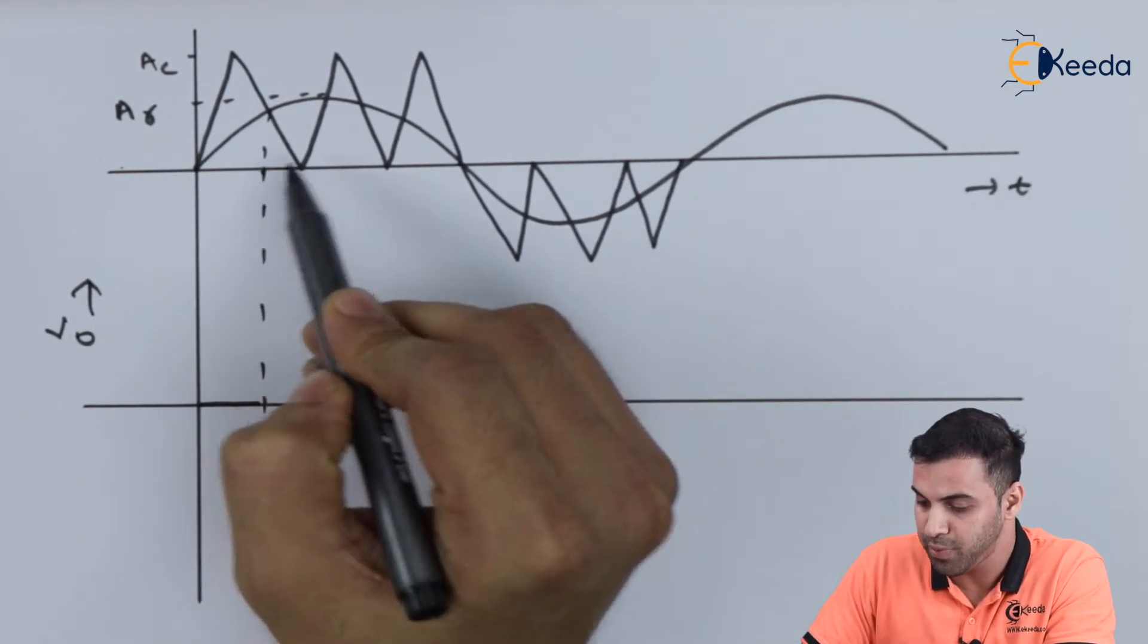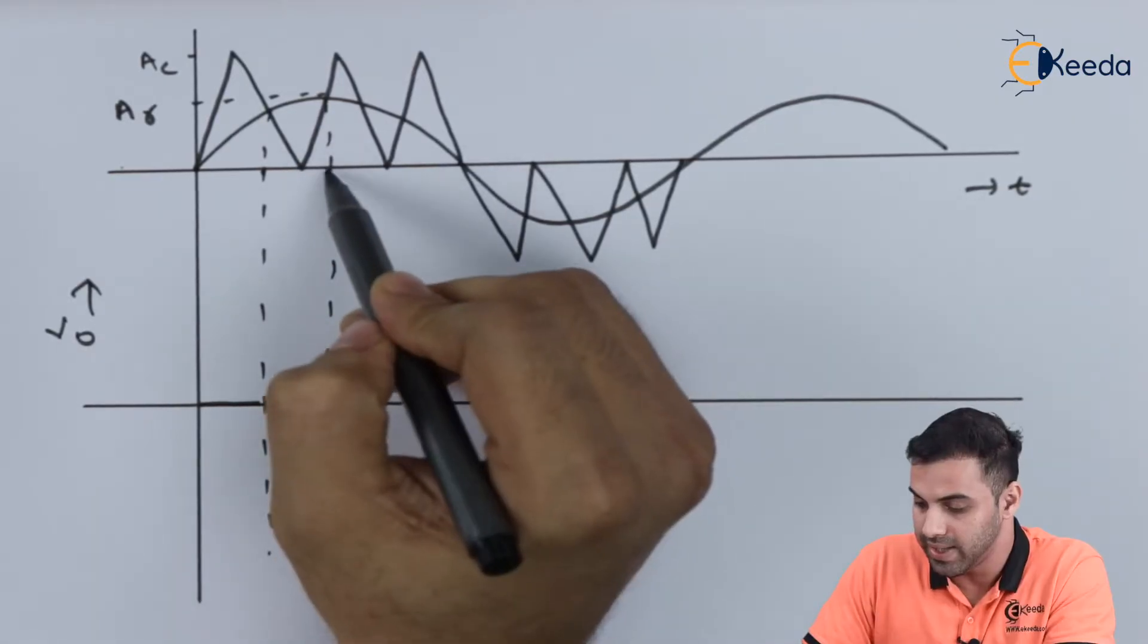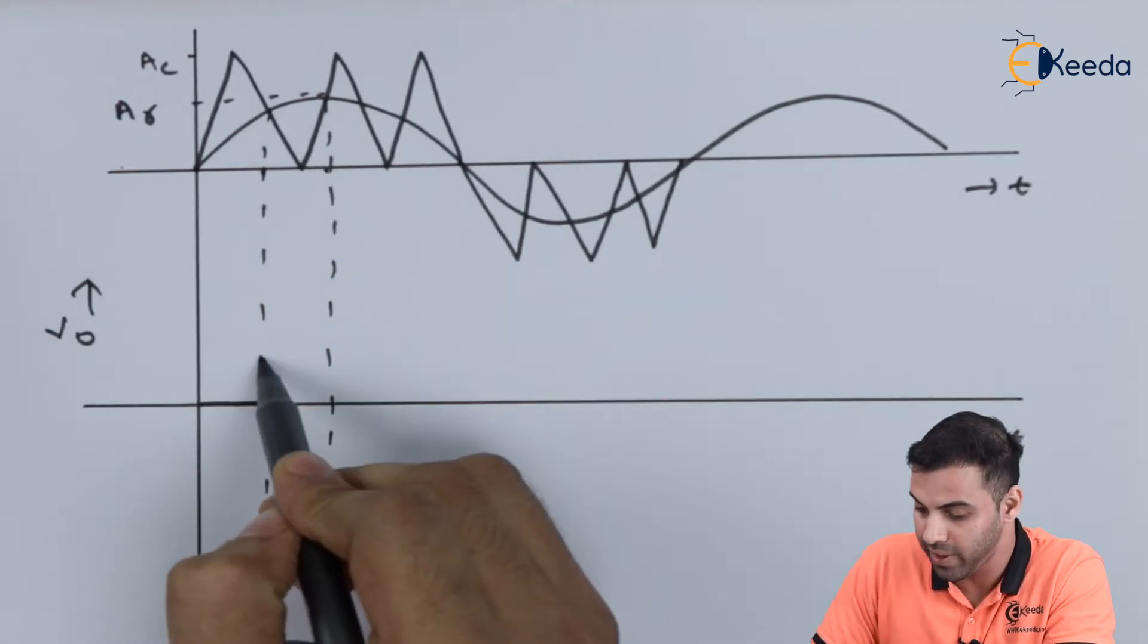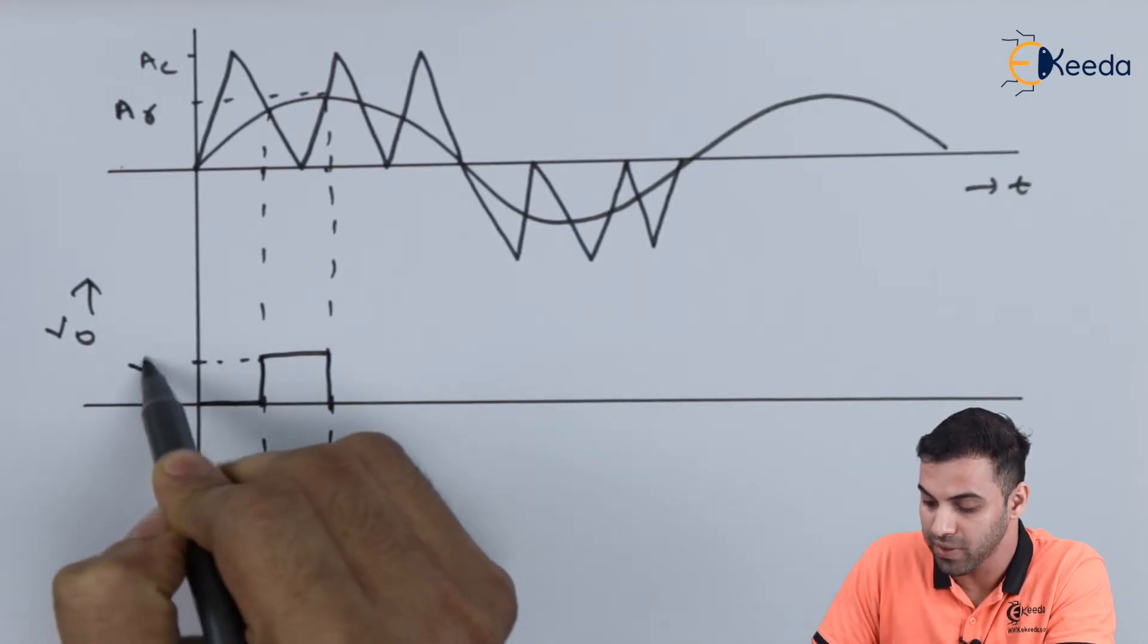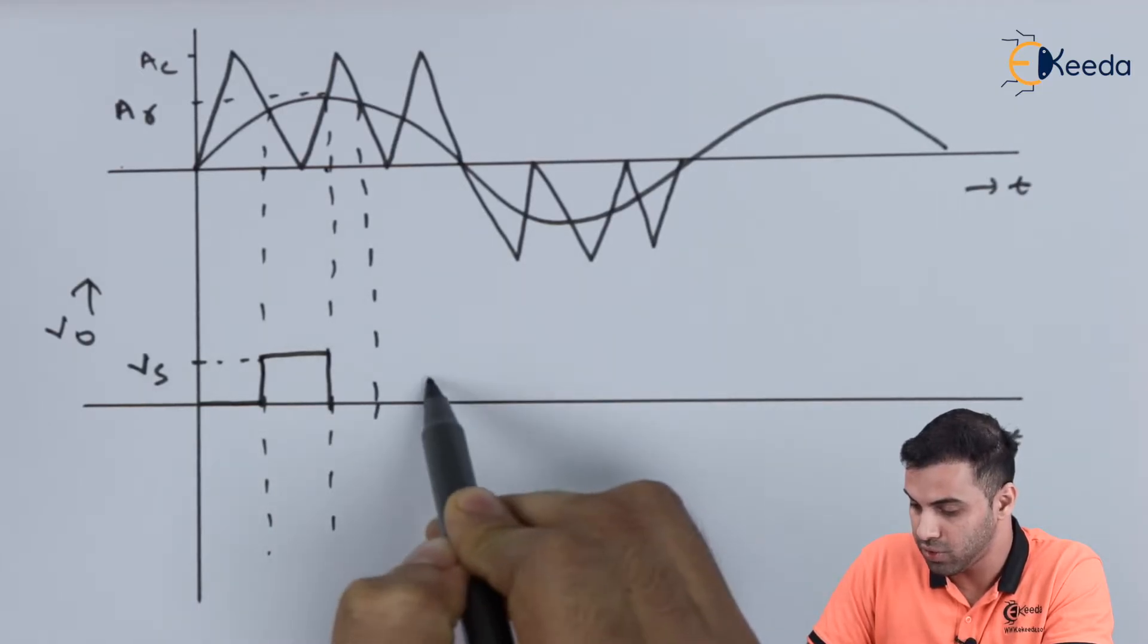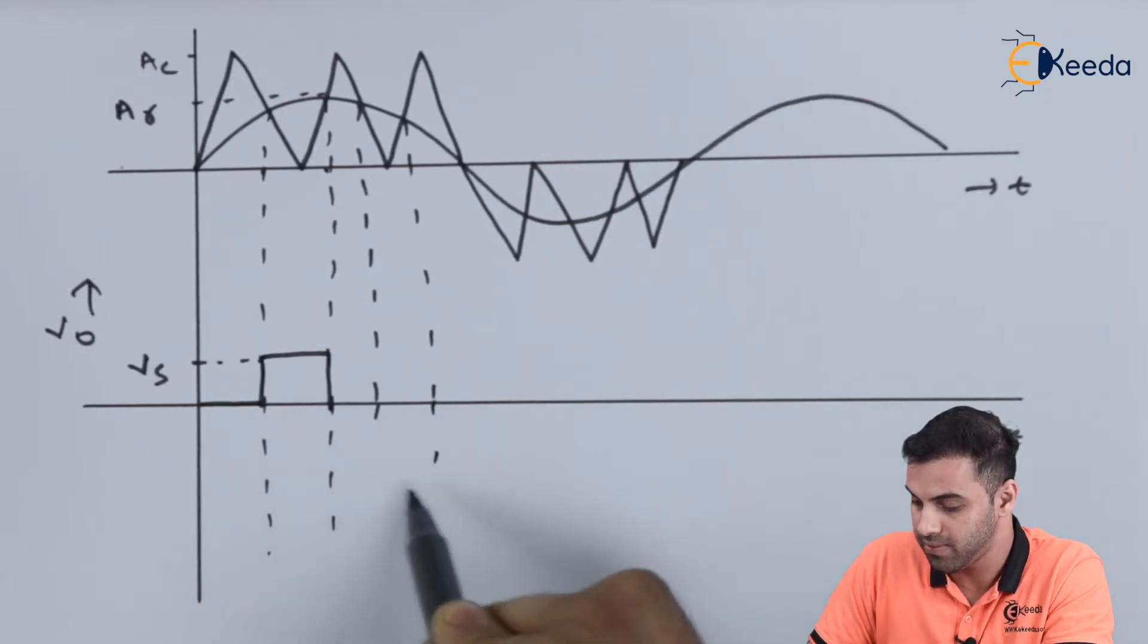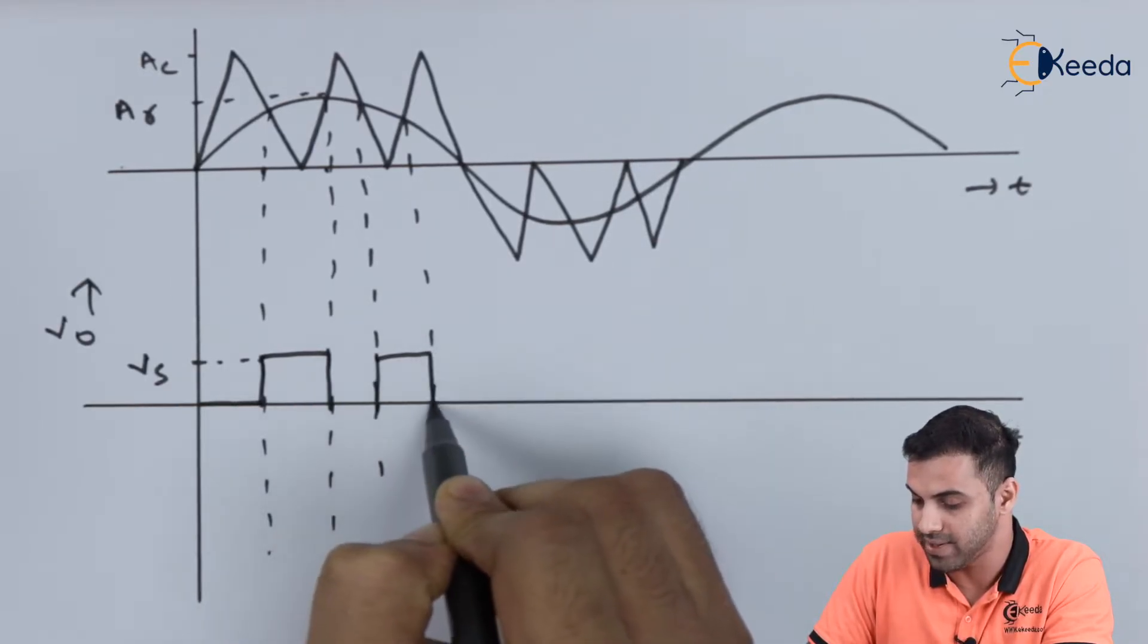Now from this point to this point, as the carrier is less than the reference signal, we will be getting a 1 output and the value of this will be VS. Again, from this point to this point, again we will be getting a VS output.